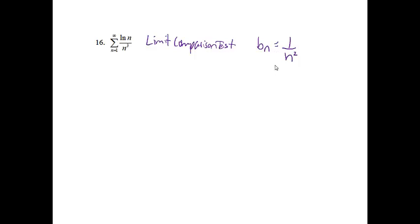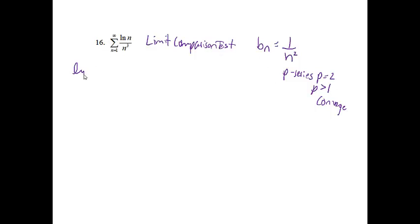I'm going to go ahead with 1 over n squared. I know that 1 over n squared, since it's a p-series with p equals 2, and since p is greater than 1, this is going to converge. So just keep that in mind. We are going to take — this is a sub n, that's b sub n — the limit as n approaches infinity of a sub n over b sub n.